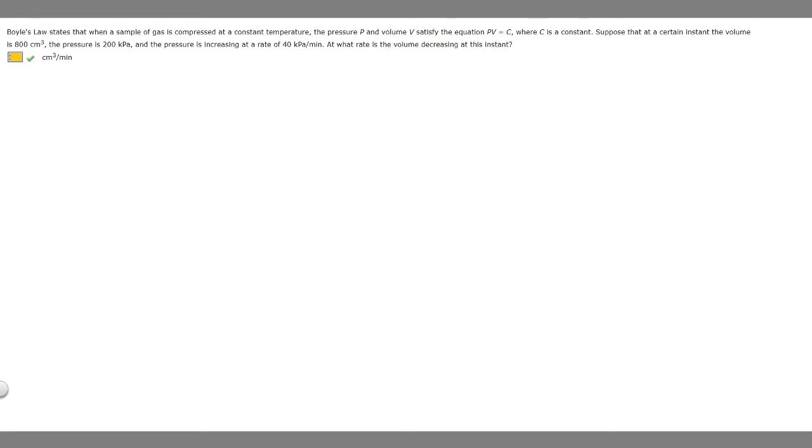In this problem, we're told that Boyle's law states that when a sample of gas is compressed at a constant temperature, pressure P and volume V satisfy the equation PV equals C, where C is a constant. Suppose that at a certain instant, the volume is 800 centimeters cubed, the pressure is 200 kPa, and the pressure is increasing at a rate of 40 kPa per minute. At what rate is the volume decreasing at this instant?